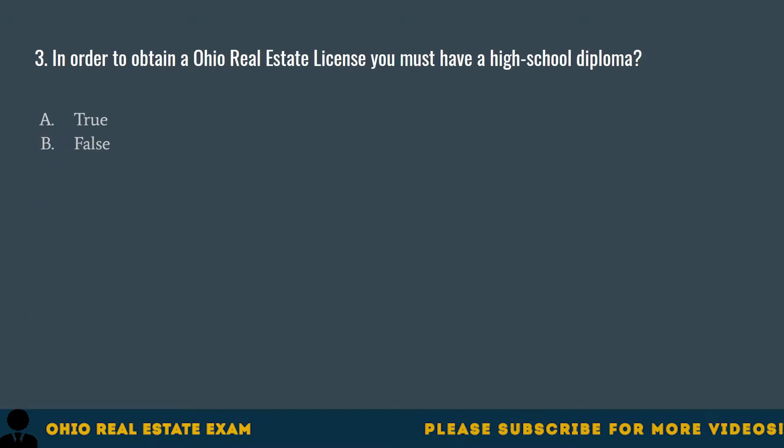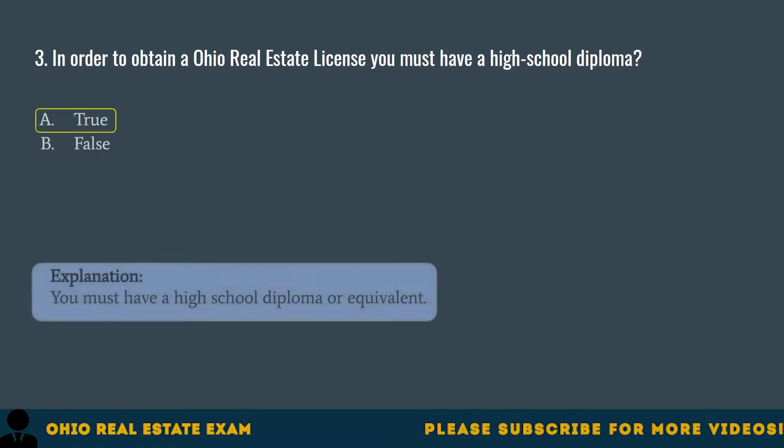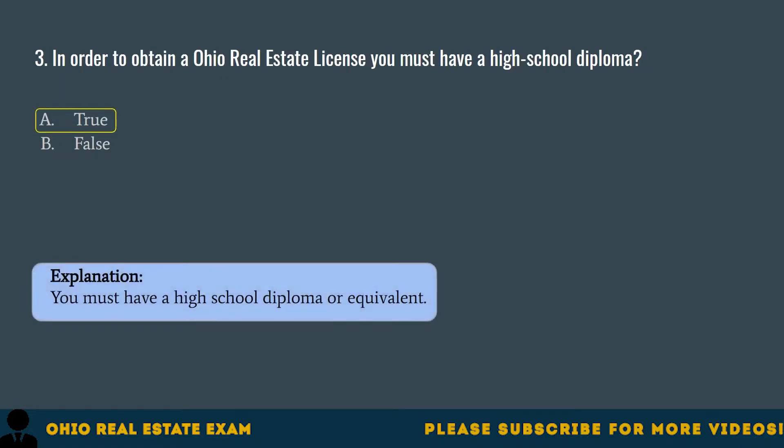Question 3. In order to obtain an Ohio Real Estate License, you must have a high school diploma. A. True. B. False. The correct answer is A. True. You must have a high school diploma or equivalent.